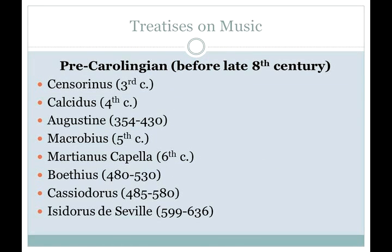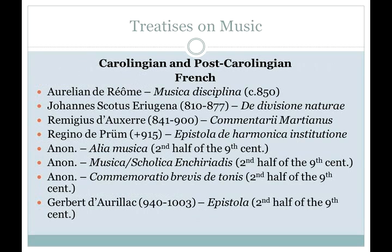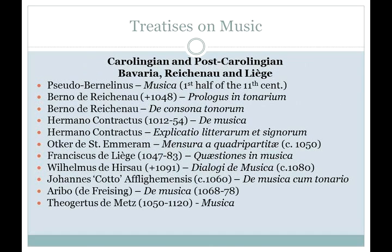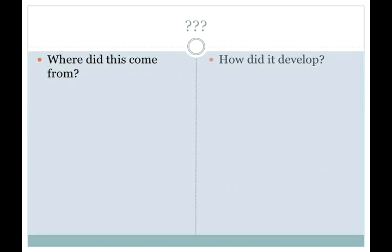If we create a chronology of Western theoretical treatises about music, we see that up into the 8th century — pre-Carolingian — there is no discussion of anything called the OctoEchos, or the eight modes. However, during the Carolingian period and after, 9th century and onward, we do see treatises discuss the OctoEchos — the eight modes — and not just a few, but many. Where did this come from? How did it develop? And why?